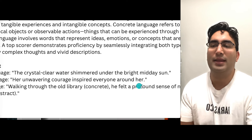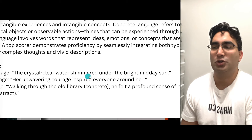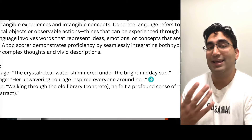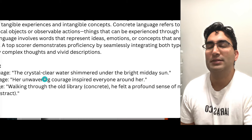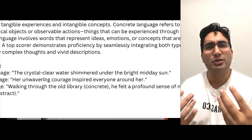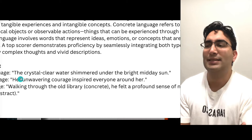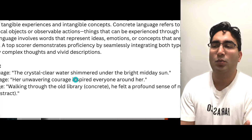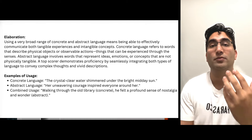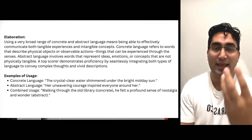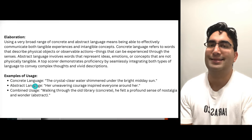You can say the water shined under the bright midday sun. You have to use good adjectives. Shimmered is a verb — advanced. Bright is an adjective, and crystal clear is an adjective. The more adjectives you use, the better. In simple words, this just means the water shined under the sun, but to make it advanced you want more descriptions, adjectives, and so on. This is what concrete language means.